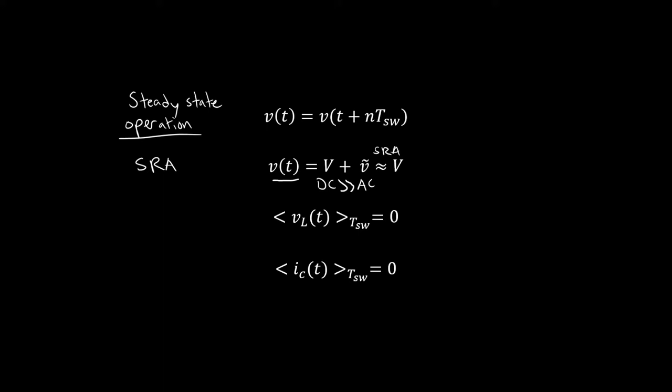Then the next one is IVSB — inductor volt-second balance — a super important tool that allows you to find DC voltages in a switch mode power supply. The observation was that if we're operating in steady state, the average voltage applied to an inductor over one switching cycle should be zero. Similarly with capacitor charge balance: if we're operating in steady state, the average current injected into a capacitor over one switching cycle is zero. Using these two tools, we can find the average voltages and currents in a switch mode power supply.